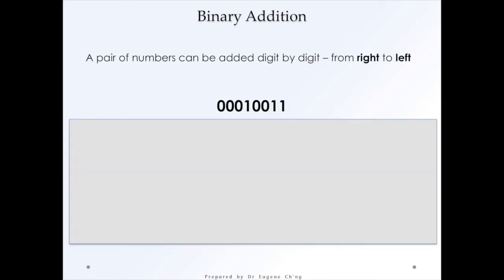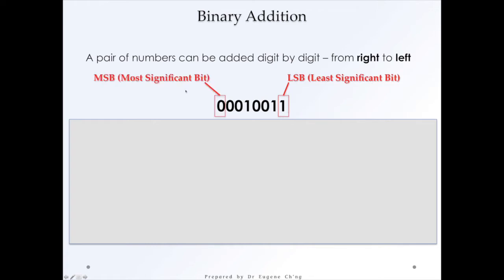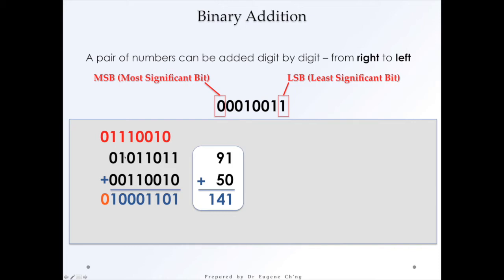Now let's look at binary addition. A pair of numbers can be added digit by digit from the right, which is the least significant bit, all the way to the left, the most significant bit. So if we have the decimal equivalent of 91 plus 50, we get 141. This is 91 as a binary equivalent, and this is 50 as a binary equivalent to the decimal. Let's look at how this is added.